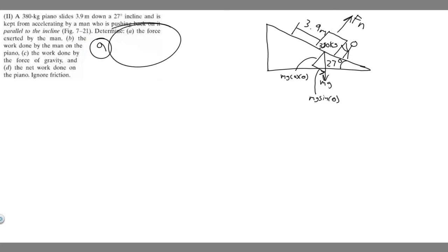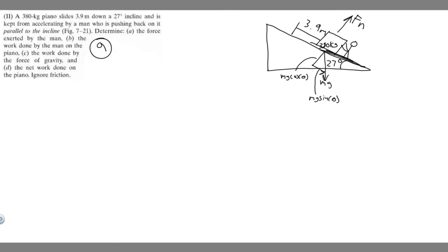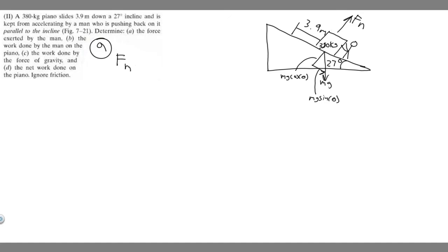Since the man is keeping the piano in place — not accelerating — the force he exerts must equal the force pushing the piano down the incline. With no friction, the only force along the incline is the x-component of gravity: mg·sin(θ). So the force the man exerts, F_m, equals mg·sin(θ), because those two forces must be equal for equilibrium.